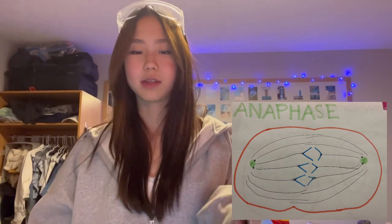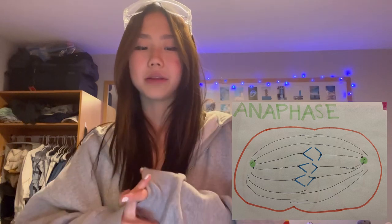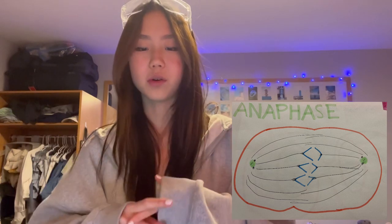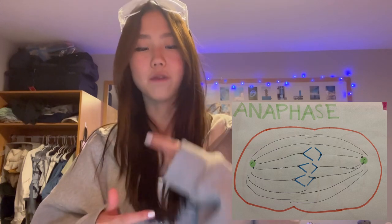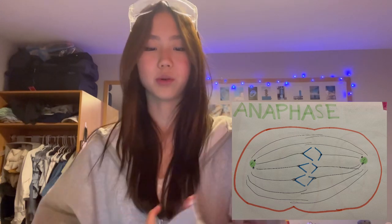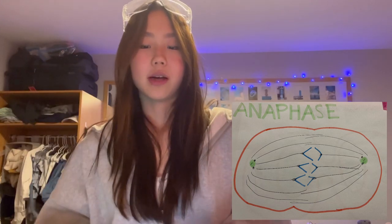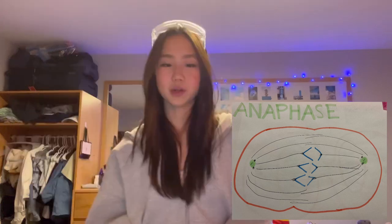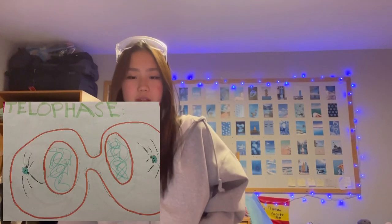Through the spindle apparatus, the daughter chromosomes move to the poles at opposite ends of the cell. Daughter chromosomes migrate centromere-first, and the kinetochore fibers become shorter as the chromosomes near a pole. The two cell poles also move farther apart during anaphase.